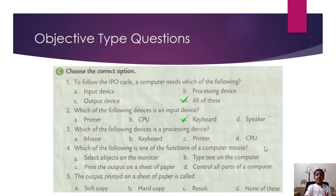Third, which of the following is one of the functions of a computer mouse? A: select objects on the monitor, B: type text on the computer, C: print the output on a sheet of paper, D: control all parts of a computer. So the answer is A, select all objects on the monitor.